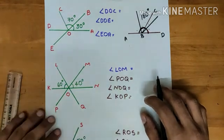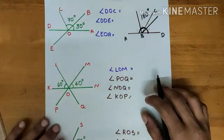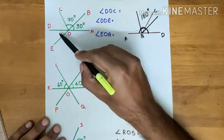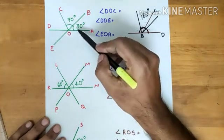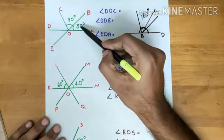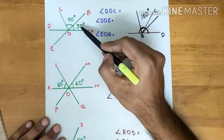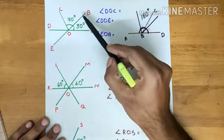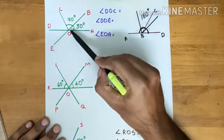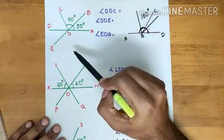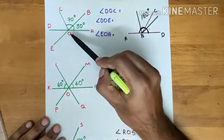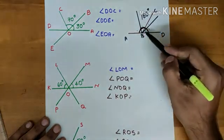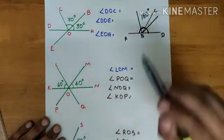Now look at our first problem. Five angles are here. Out of these five angles, two of them are given. The first one, angle BOA, is given — it is 30 degrees. And angle BOC is given — it is 70 degrees. We want to find the remaining three angles.